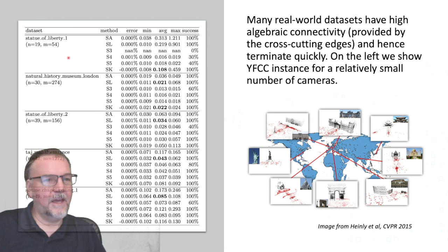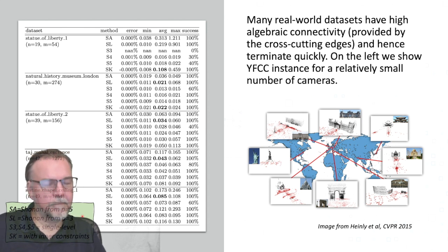Here are five instances of the YFCC dataset from Heinly et al. This is an image from their paper and here we show the convergence of several methods that we compared. These are all Shonan variants, but S3, S4 and S5 only operate at one level, so they don't actually go to the next level when they are stuck and you can see that in the Statue of Liberty dataset some of them get stuck. We probably ran 20 times here and 30 percent of the time we converged and the other 70 we did not.